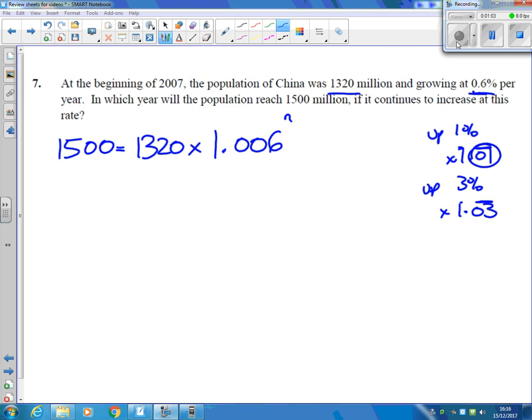The hardest bit there is trying to get that equation sorted. Now, divide both sides by the 1,320.